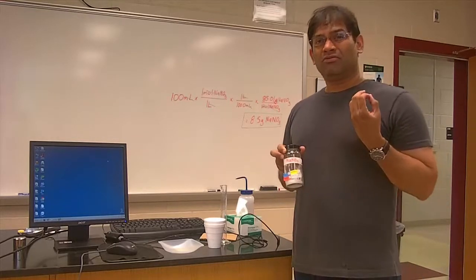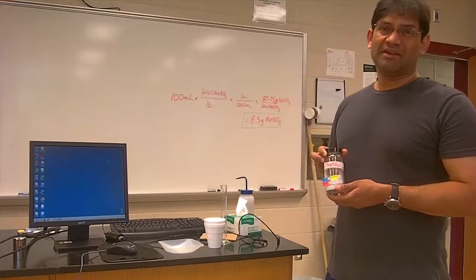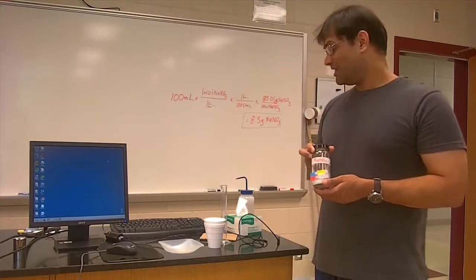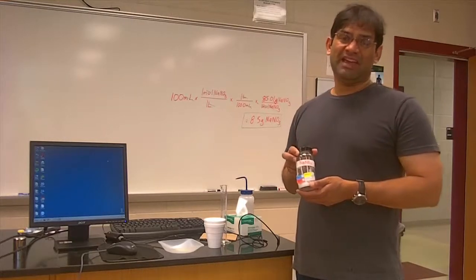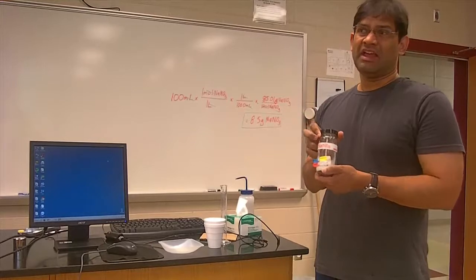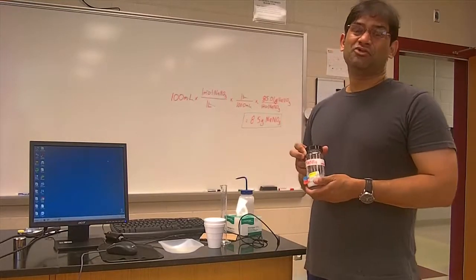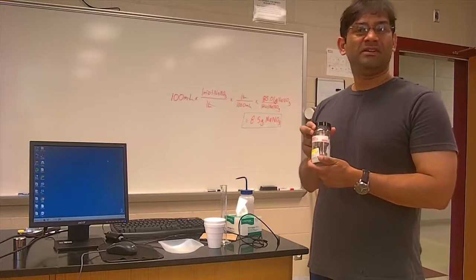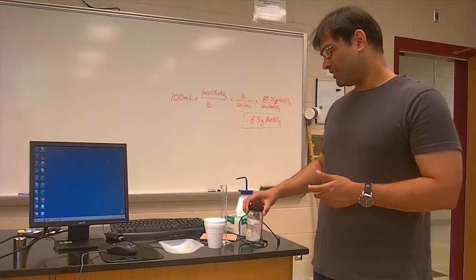Three main components go into the thermodynamics of a system. One is the free energy, which is delta G. The other one is the enthalpy, which is delta H — that is what you'll actually be measuring here. And then from that, you'll be measuring the entropy, delta S. So the only real measurement is delta H, and from that you'll be deriving delta S.